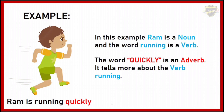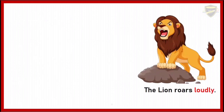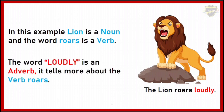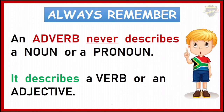Let's see another example: The lion roars loudly. Again, I have highlighted the word 'loudly.' In this example, 'lion' is a noun and 'roars' is a verb. The word 'loudly' is an adverb — it tells more about the verb 'roars.' Always remember, an adverb never describes a noun or a pronoun. It describes a verb or an adjective.